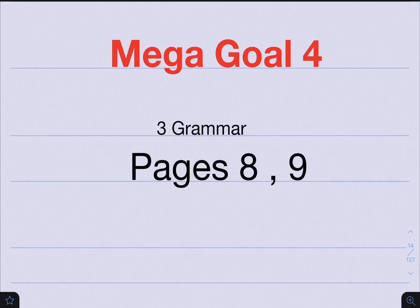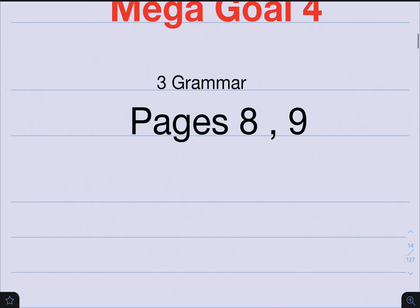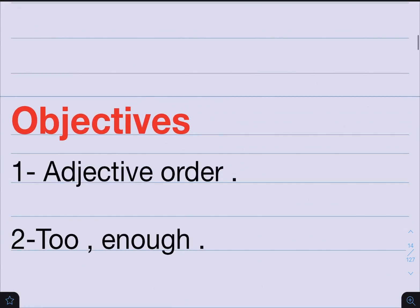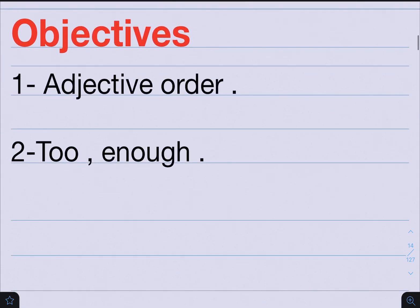Hello everybody. Mega Goal number 4, Unit 3 Grammar, pages 8 and 9. Now let's take a look at the objectives. Number 1: Adjective Order. Number 2: Too and Enough.